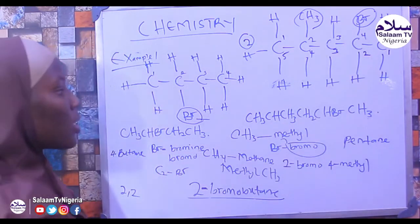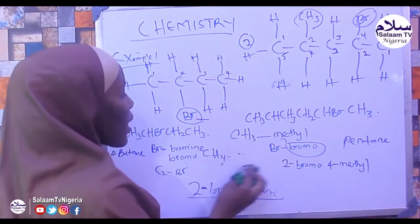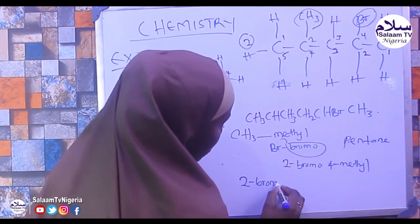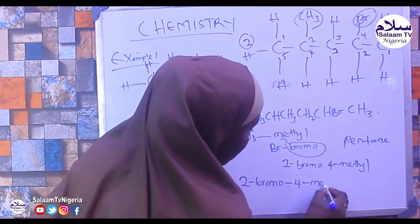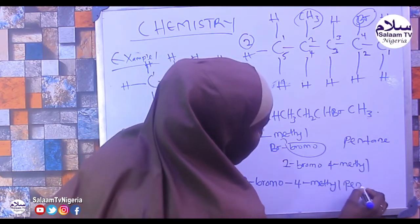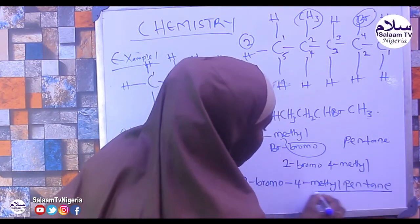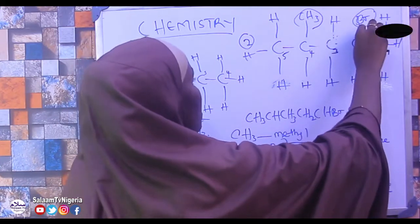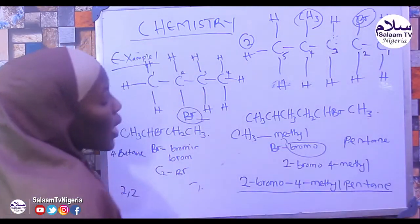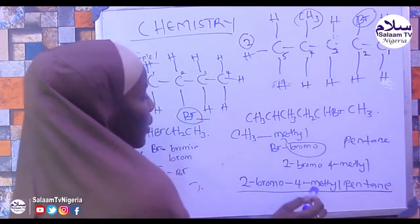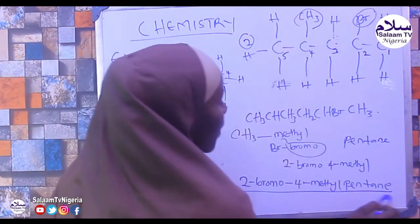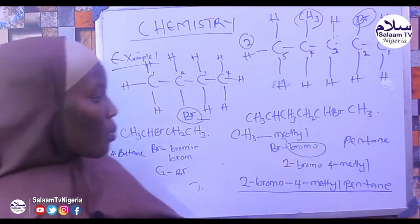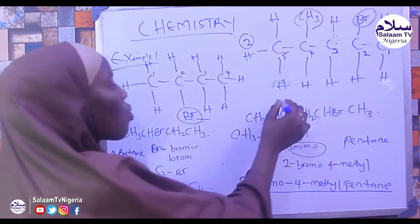Alternatively, numbering the other way gives 2-bromo-4-methylpentane. We shift the position and check: under position 2 there is bromine, and under position 4 there is methyl, and the parent name is pentane — 1, 2, 3, 4, 5. Therefore the name is 2-bromo-4-methylpentane.